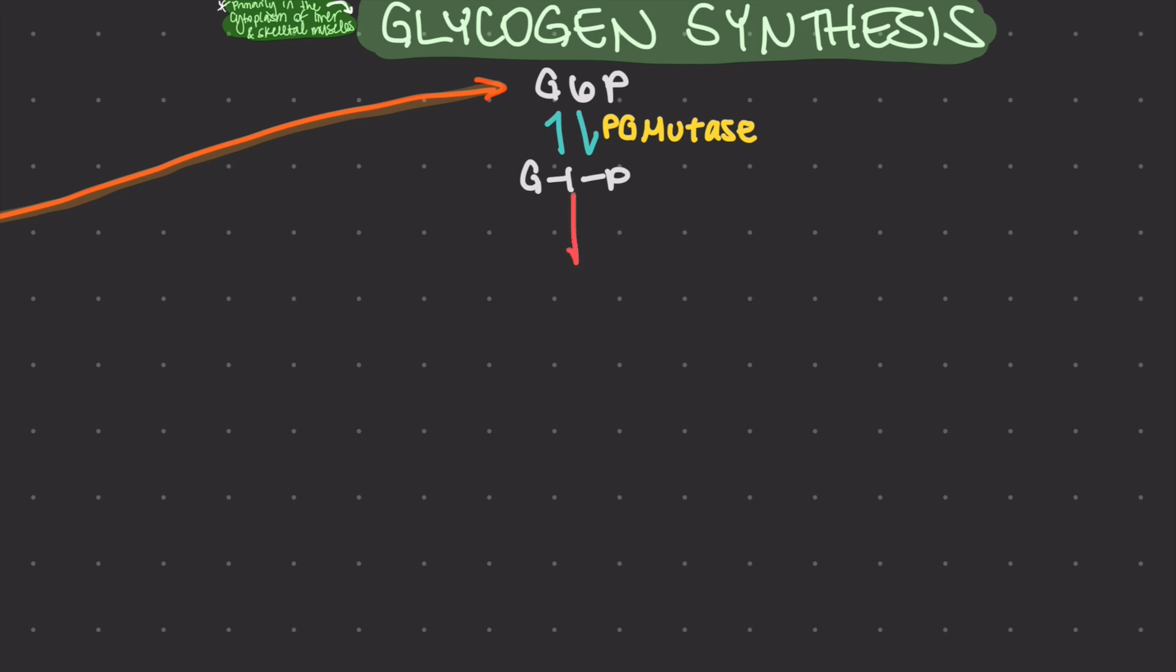Firstly, uridine triphosphate combines with glucose-1-phosphate to form UDP glucose and pyrophosphate, or PPI. This is an endergonic reaction, meaning it requires energy.